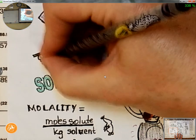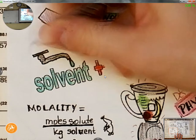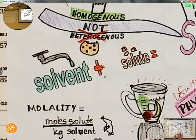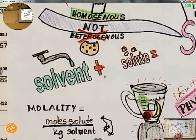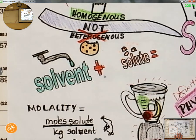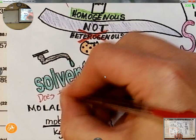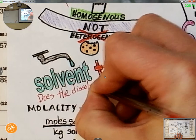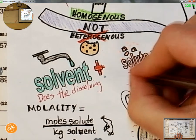Based on the picture — I've got water and I've got Kool-Aid — the Kool-Aid dissolves in the water. Does the Kool-Aid dissolve the water, or does the water dissolve the Kool-Aid? The water dissolves the Kool-Aid. So: a solvent is the thing that does the dissolving, and the solute is the thing that gets dissolved.